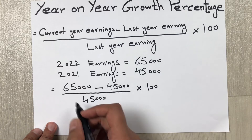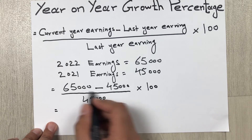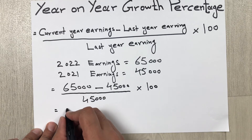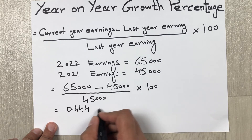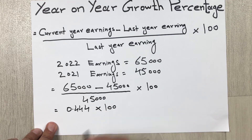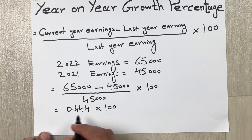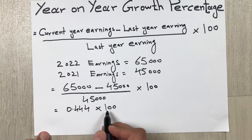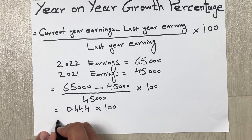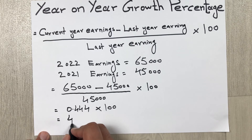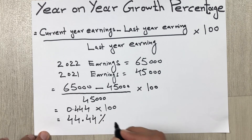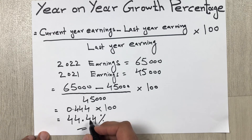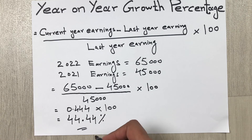When we do this calculation, we get 0.444 multiplied by 100, which gives us 44.44%. So 44.44% is our year on year growth percentage.